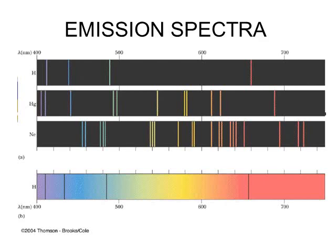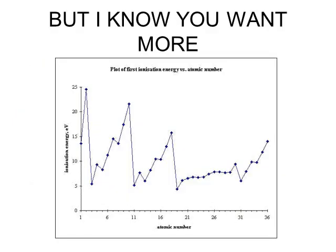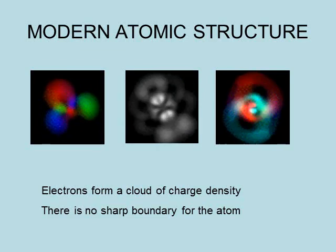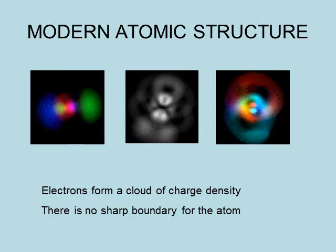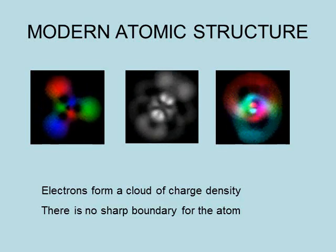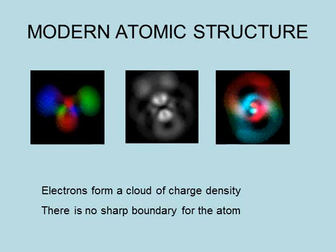Bohr's model is still not complete. The emission spectra of other elements show multiple lines that cannot be explained by just four or five shells, and the graph of ionisation energy versus atomic number shows mini jumps and unexplained dips beyond the major shell transitions. This led Schrödinger to postulate a wave model with no distinct shells, but areas of charge density where the probability of finding an electron is greater. Within these charge clouds are regions called orbitals, which determine the electron configuration of the atom.